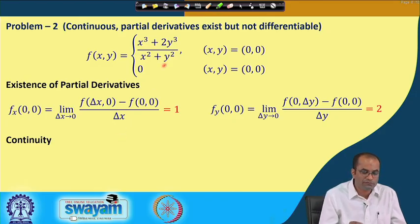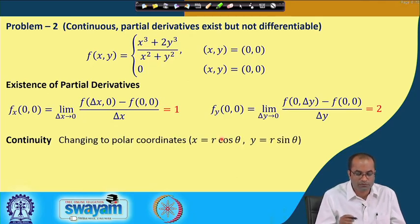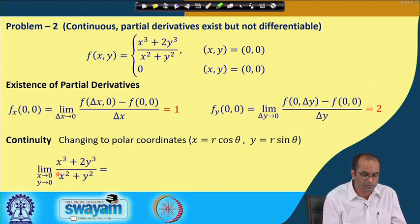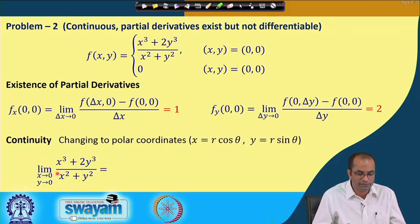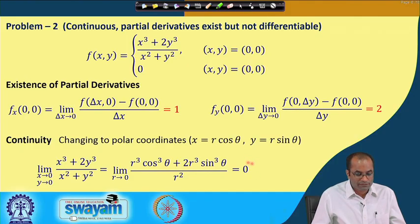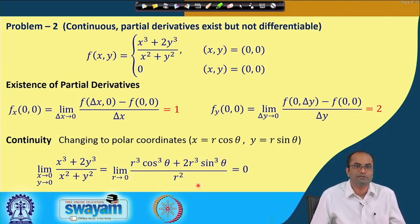For continuity of this function, we convert to polar coordinates with x = r·cosθ, y = r·sinθ. The numerator gives r³·(cos³θ + 2sin³θ) and the denominator r², leaving r·(cos³θ + 2sin³θ). As r → 0, this limit is 0, which equals f(0,0) = 0. So the function is continuous, and its partial derivatives exist.